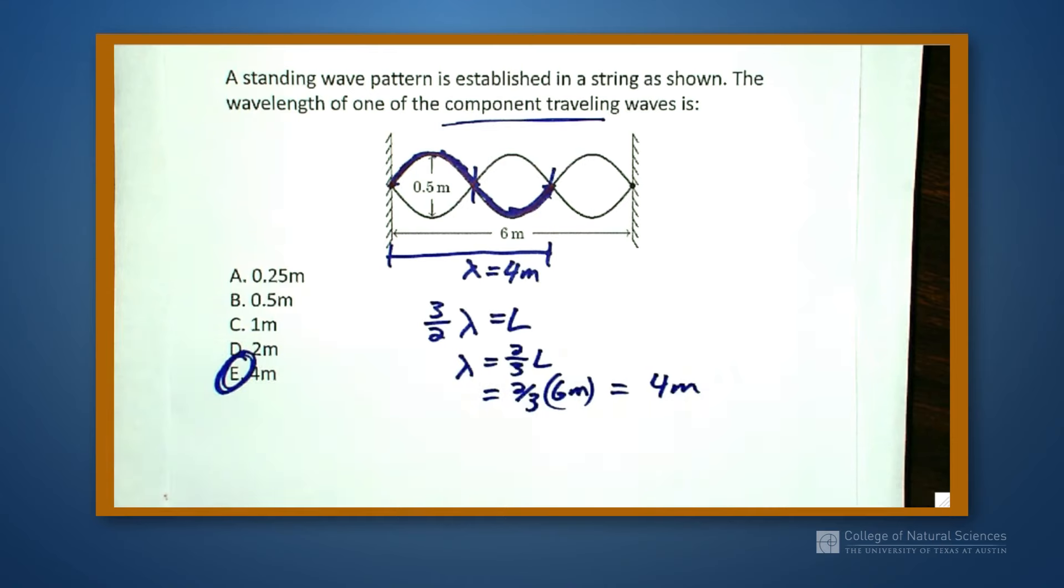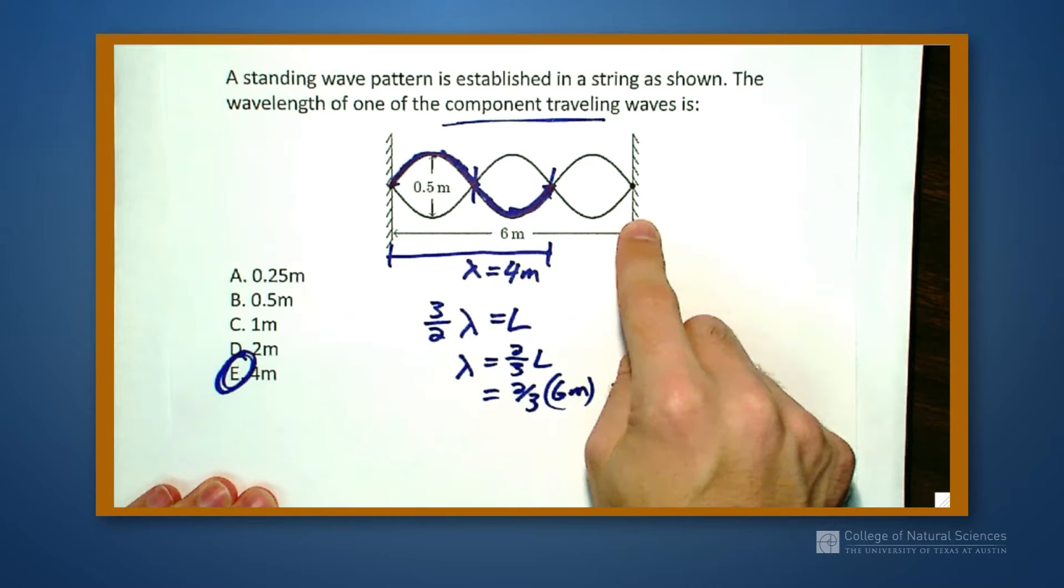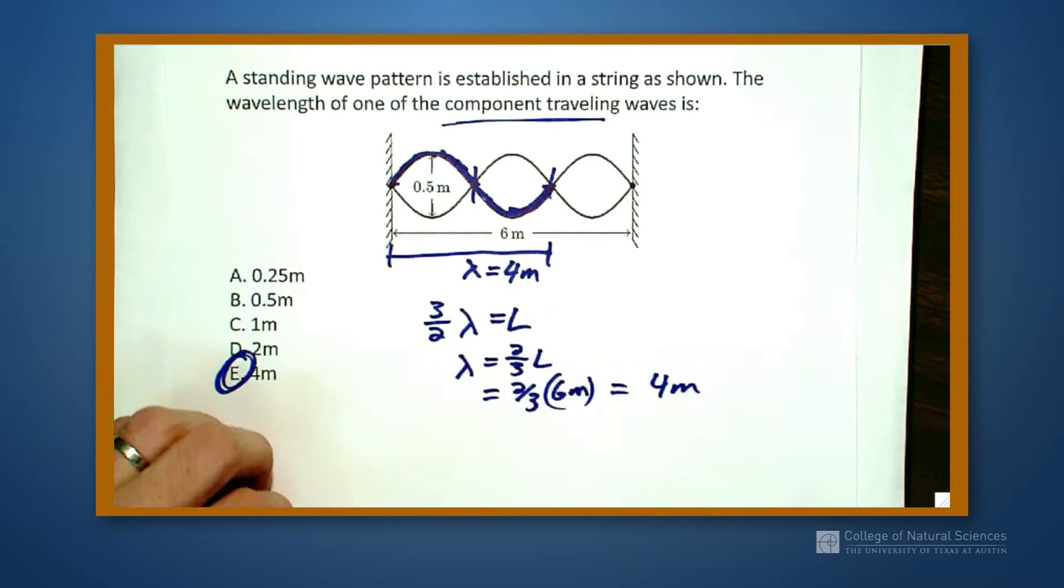So two different ways to solve it, one by looking at the picture, and one by actually going through and setting the length, the total length, equal to some number of wavelengths that we have.